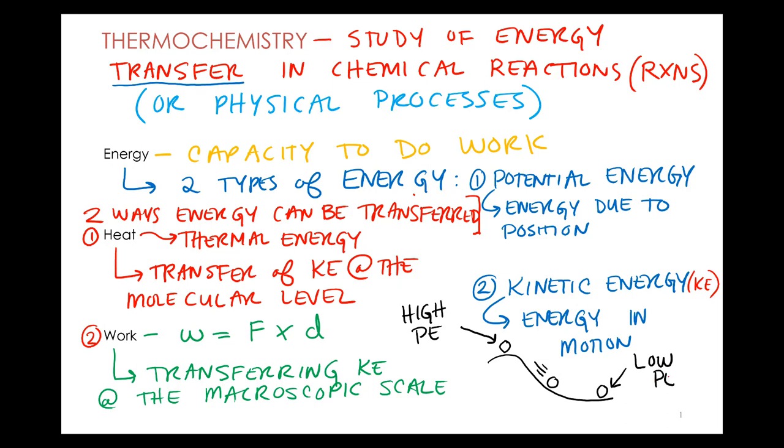Now, we also learned about in Gen Chem 1 the law of conservation of energy, right? Energy cannot be created or destroyed. So, if I start out at high potential energy, units we're going to eventually use are joules. So if I say 100 joules of potential energy up here, and now it only has 50 joules, where would that 50 joules of energy go?